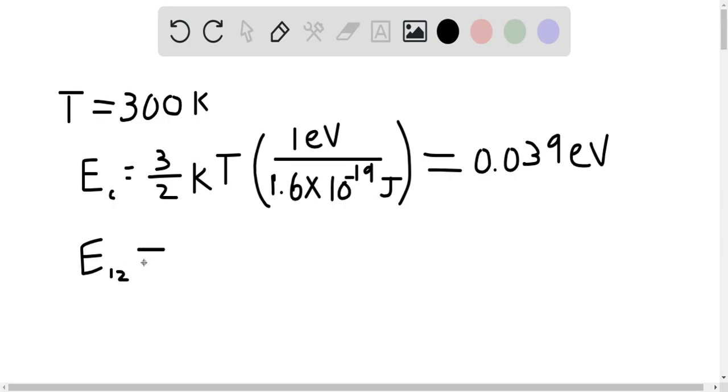E_12 is equal to negative 13.14 electron volts, which is the ground state energy of hydrogen, multiplied by 1 over 2 squared minus 1 over 1 squared.